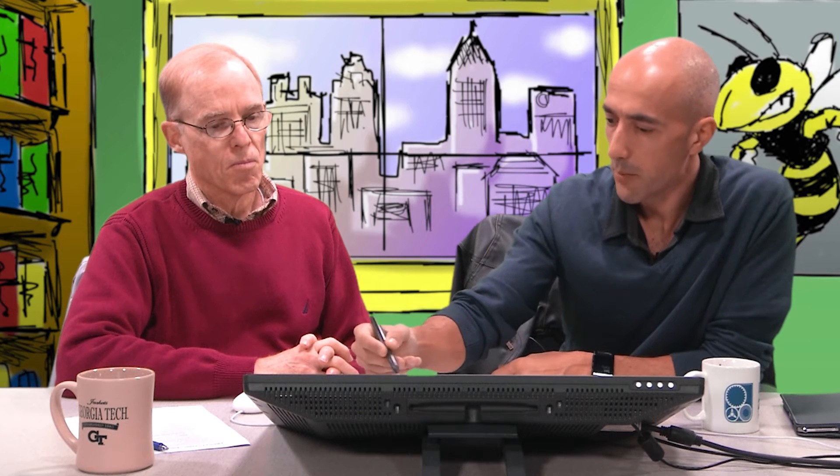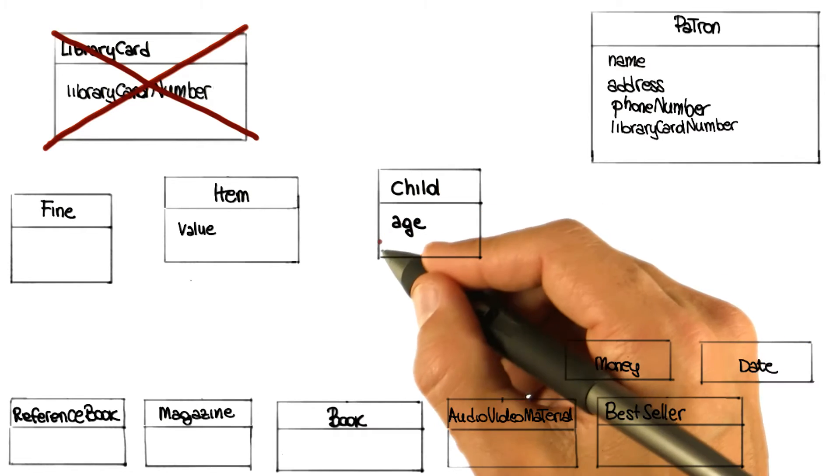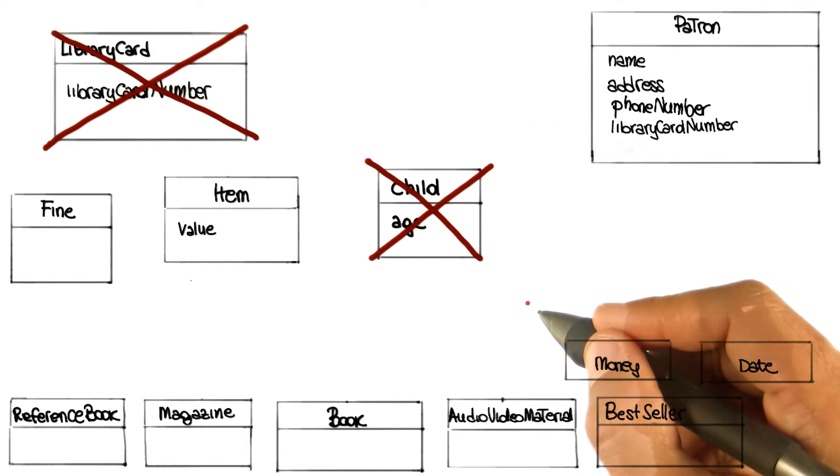One of the issues is that there are patrons who are children, and they are no longer children when they become 13 or older. And if we represent them with a separate class, we cannot really change the type of an instance. We'd have to destroy the patron and create a new one, which means we'd also have to transfer any history we want to keep. So I think I like better the idea of representing age explicitly in the patron, and behaving differently based on whether the patron is 12 or younger or 13 or older. This allows us to eliminate the Child class and simplify things.